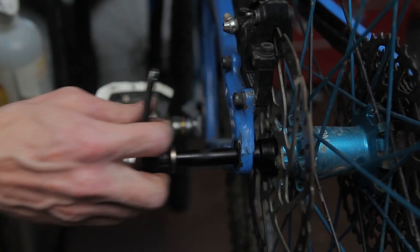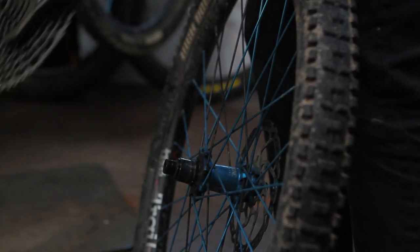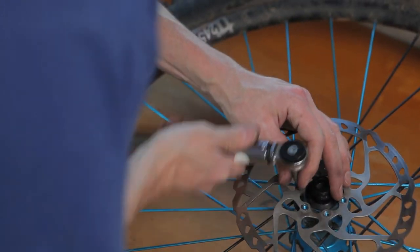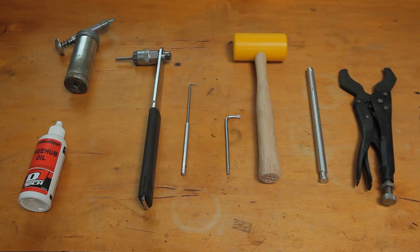Once you've got the wheel off the bike, remove the cassette and rotor. If you're going to be truing the wheel or changing any spokes, you'll need to remove the tire as well. For just a basic hub service, tires can stay put. Be sure to have all your tools prepped and ready to go before getting started.